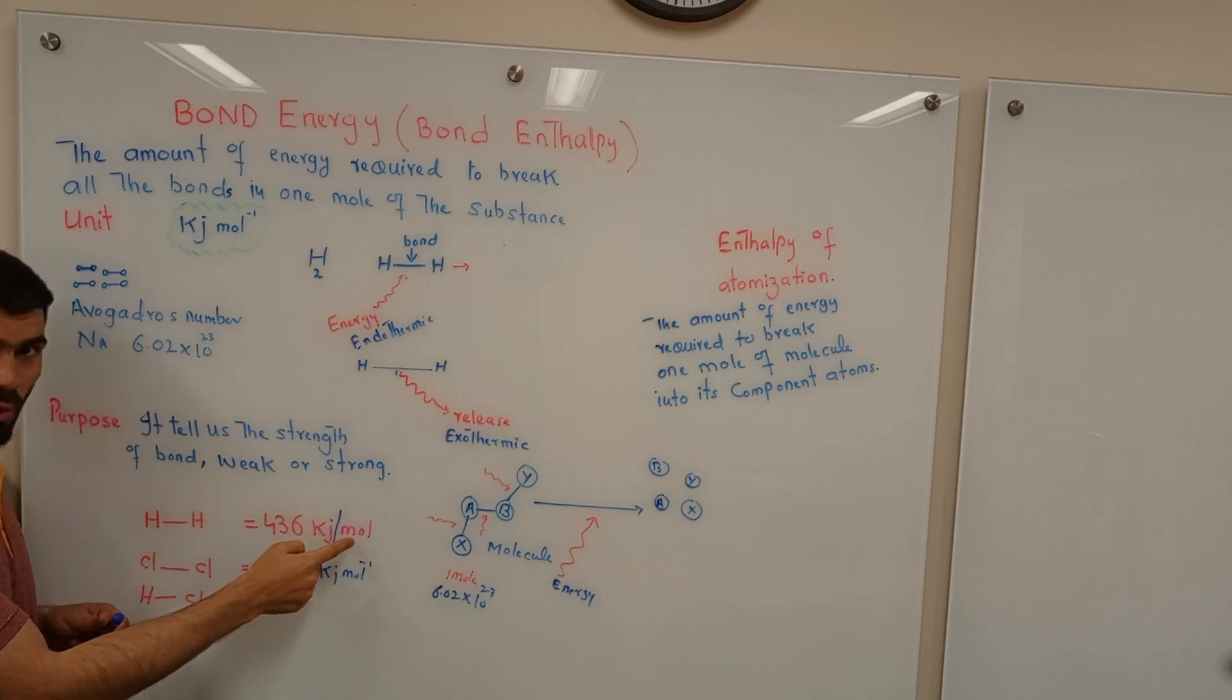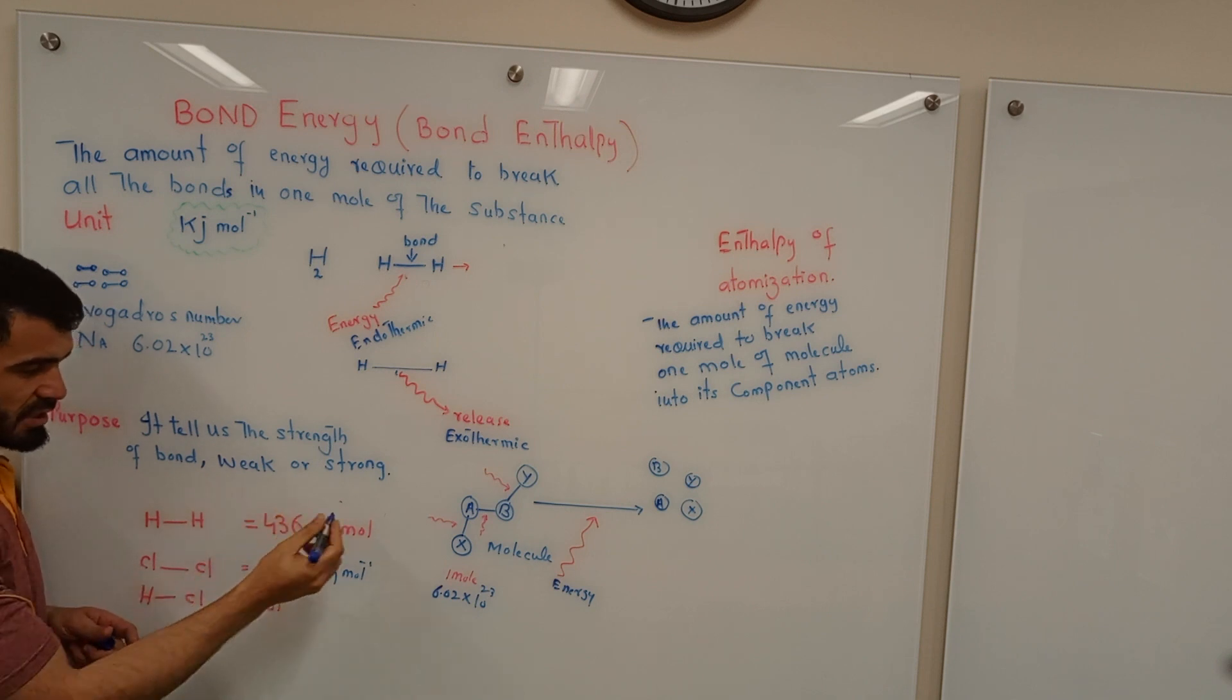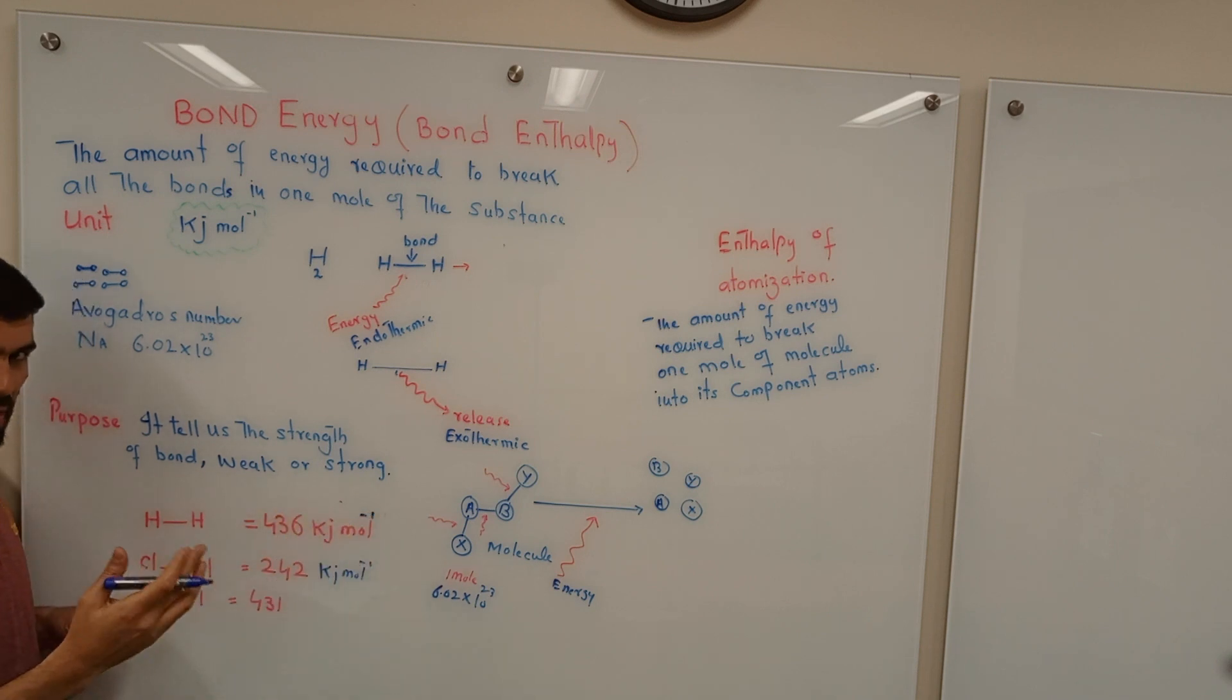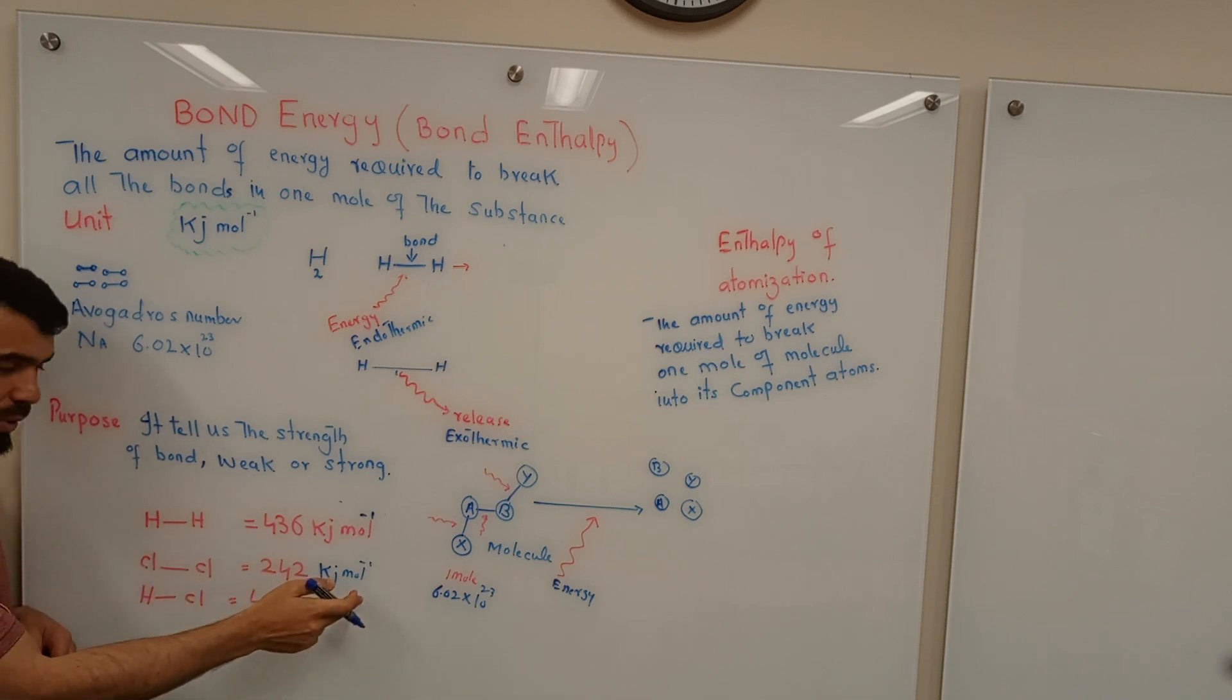Per mole can be written as a line between kilojoule and mole, or if the line is not there, there must be minus one. In either case, for the right, so this chlorine Cl2 is 242 kilojoule per mole, and HCl is 431 kilojoule per mole. This is the practice.